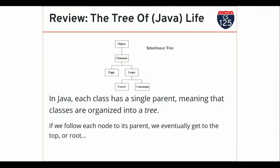As I go down the tree, I'm gaining features — lower classes are adding state, adding new fields, adding new behaviors, adding new methods I can call. So as I go down, I have access to more interesting parts of those custom classes, but I can operate on fewer of them. For example, if I write a method that takes a Letter as a parameter, it can be passed a Letter, a Vowel, or a Consonant, but not a Digit, a Character, or an Object. As I go down I lose generality but pick up capability. As I go up, I lose capabilities but gain generality so I can operate on more object types.